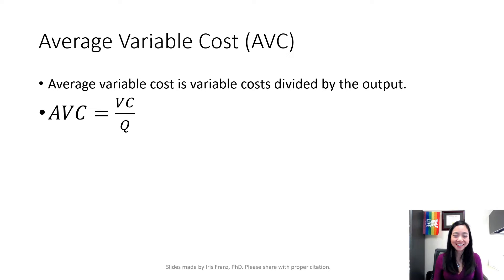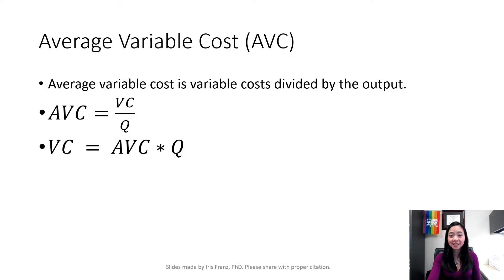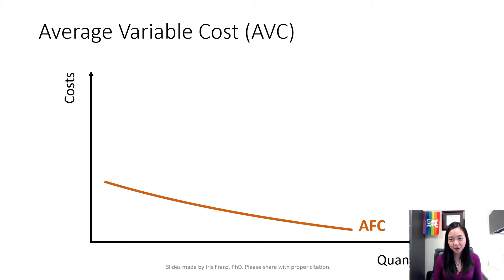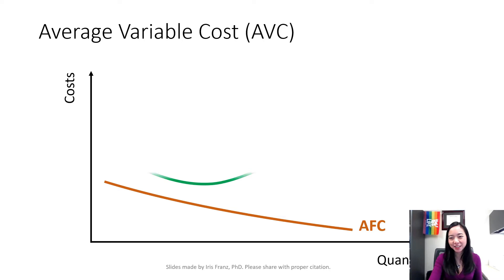Average variable cost is equal to variable cost divided by quantity. Or you can say that variable cost is equal to average variable cost times quantity. If you put average variable cost together on a diagram with average fixed cost, you can see that average variable cost is a U-shaped curve.